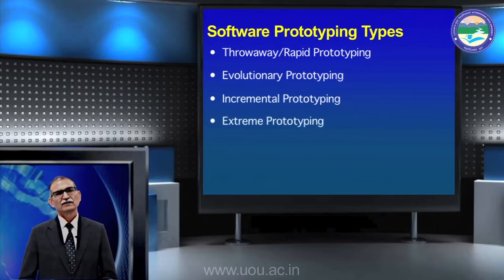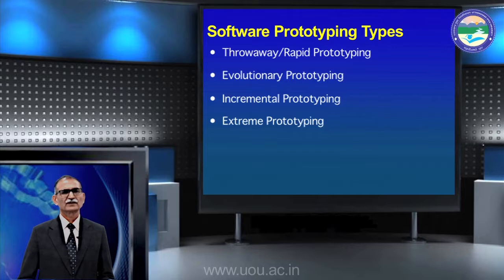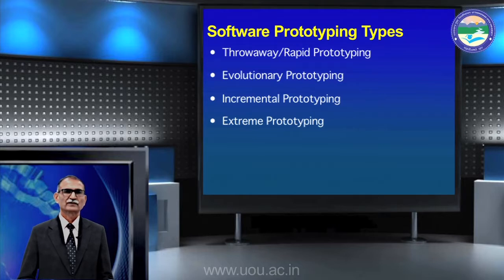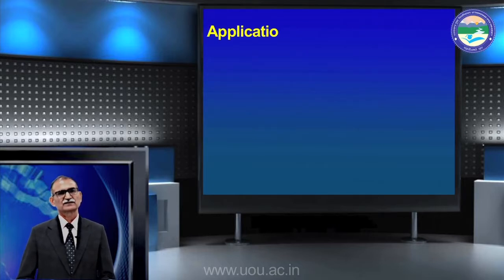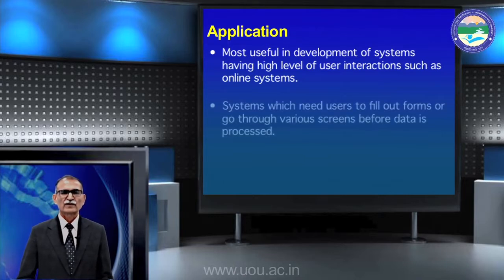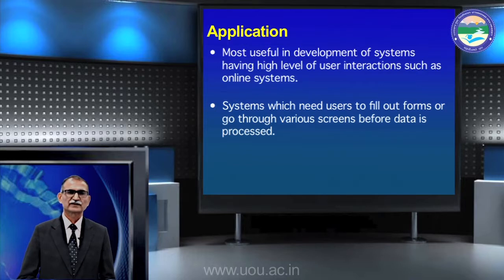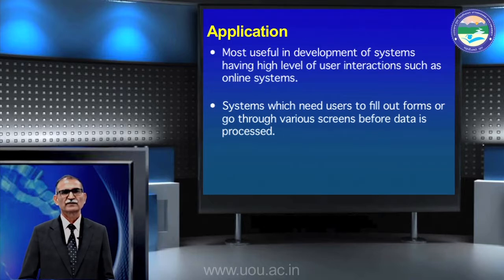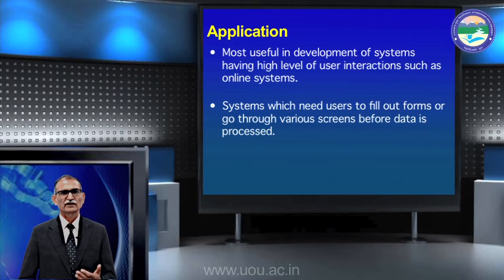Extreme prototyping is difficult but these four prototype types are normally used. This module is most useful in development of systems having high level of user interaction, such as online systems. Web applications with forms — for example a railway reservation system, which is mostly forms — in this kind of environment, you first want users to use it, get feedback, and deploy it online.